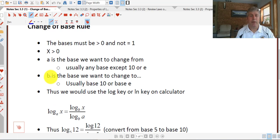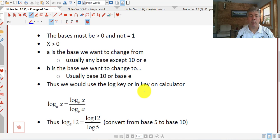And b here is the base we want to change to. We usually want to change to base 10 or base e. So we're going to use either the log key or the natural log key on our calculator. If we're going to base 10, we want to use the log key. If we're going to base e, we want to use the natural log key.